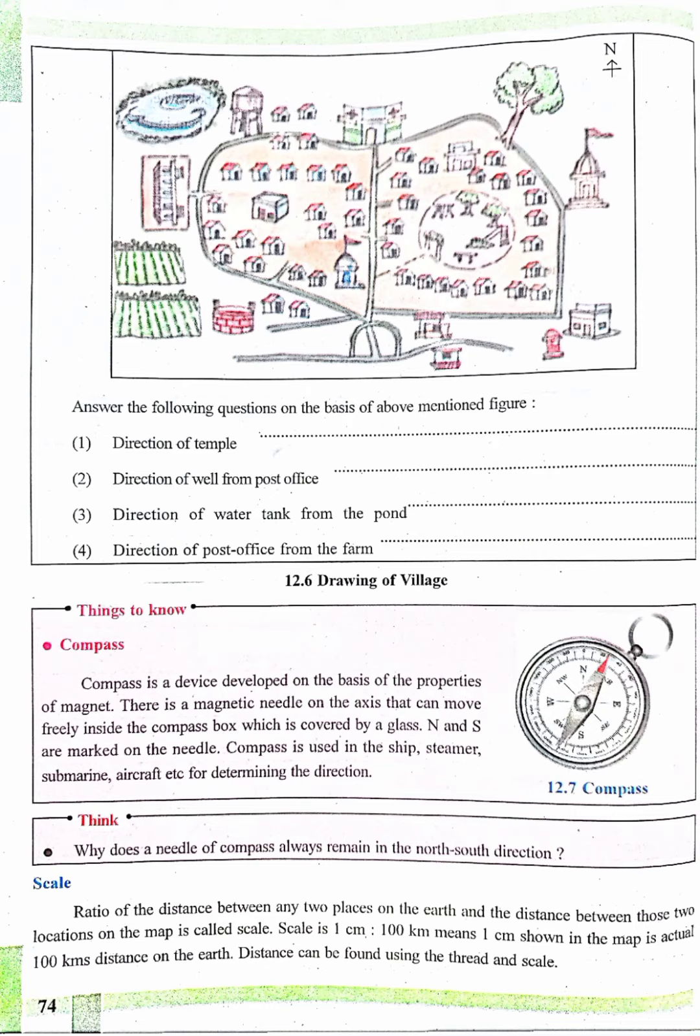Think: Why does the needle of compass always remain in the north-south direction? The answer is that the earth works as a magnet. A magnet which can move freely remains steady in north-south direction because the magnetic field of the earth affects it.